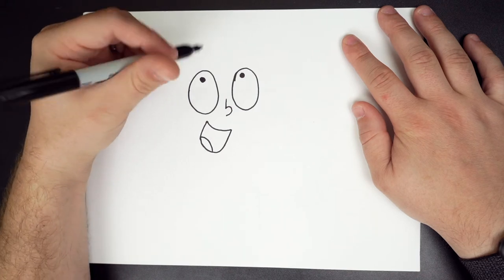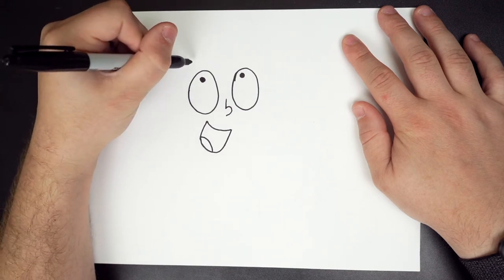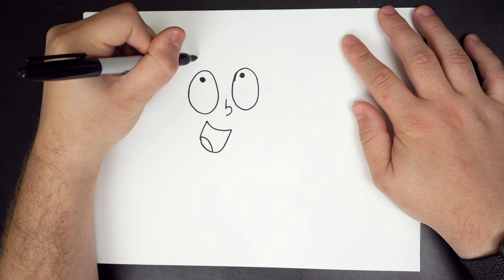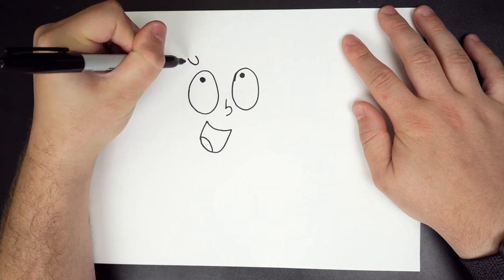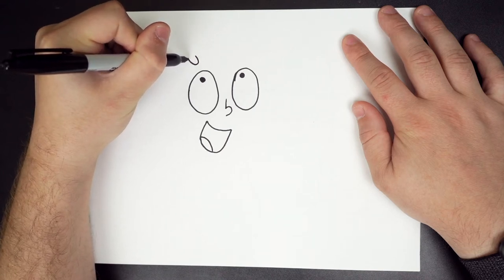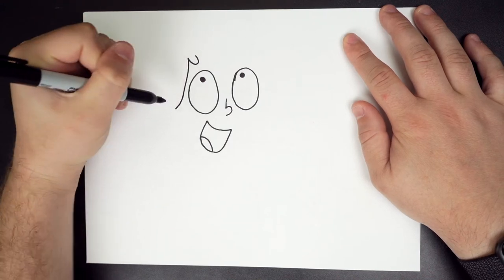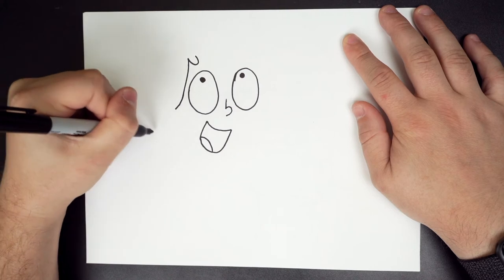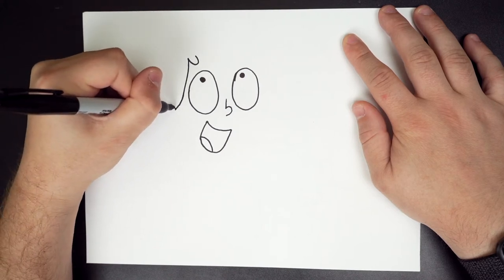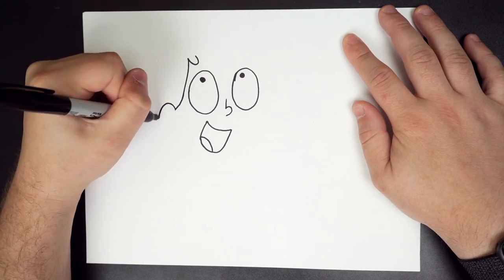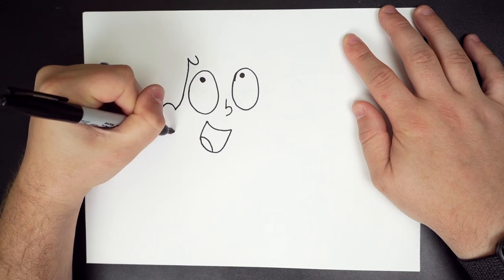Then what we're going to do is we're going to do a little loop, and then follow this loop down to about here. Then we're going to do almost a full circle, or I guess oval circle for her ear. Stop.